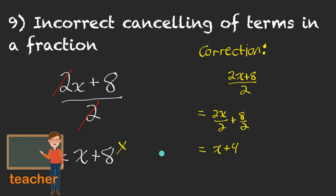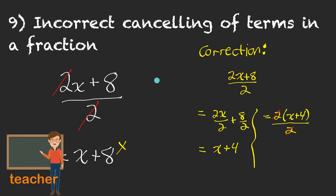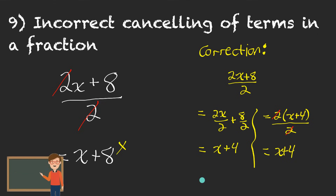That gives x plus 4. Notice the 2x and the 8 are both being divided by 2. Another way you could do this: common factor a 2 from the numerator, giving me 2 times (x plus 4) all over 2. Now that the numerator is in factored form, you can cancel factors. A factor of 2 in the numerator and a factor of 2 in the denominator — something divided by itself is 1 — so I'm left with just x plus 4. Two different ways to get the same correct answer. But x plus 8? No.